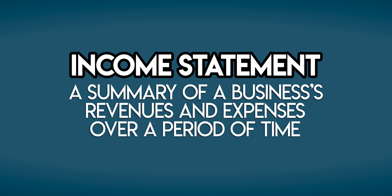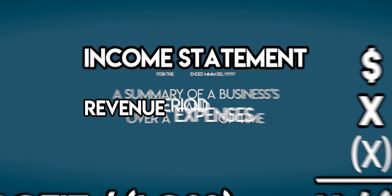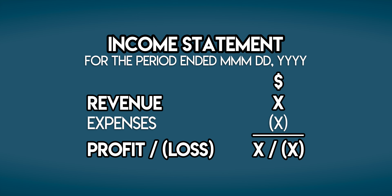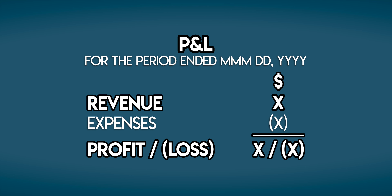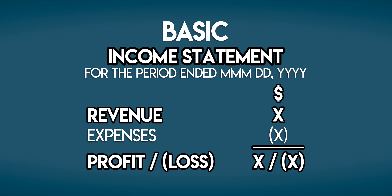The income statement is a financial report that summarizes a business's revenues and expenses over a period of time. If you take a business's revenue and subtract its expenses, then you're left with a profit or a loss. That's why it's sometimes called the profit and loss statement or the P&L, but we'll call this one the basic income statement.